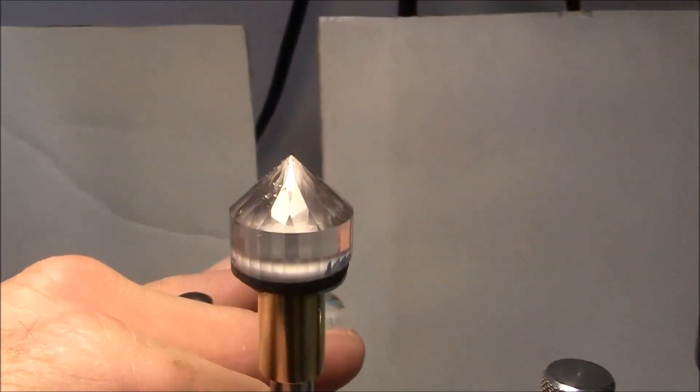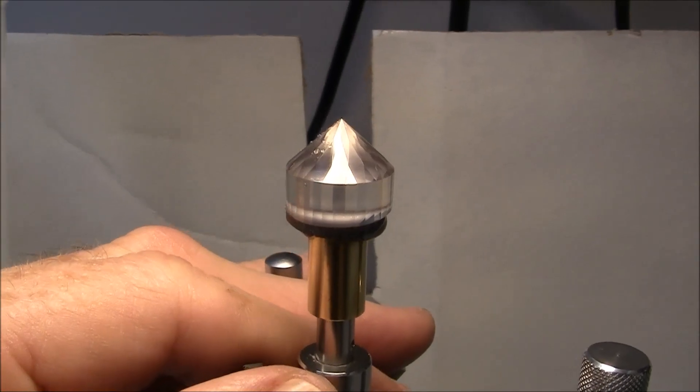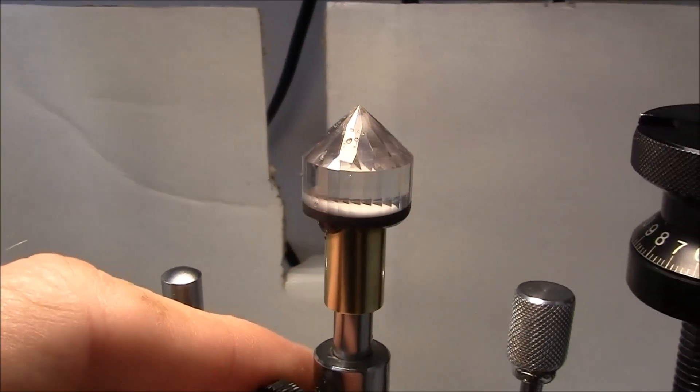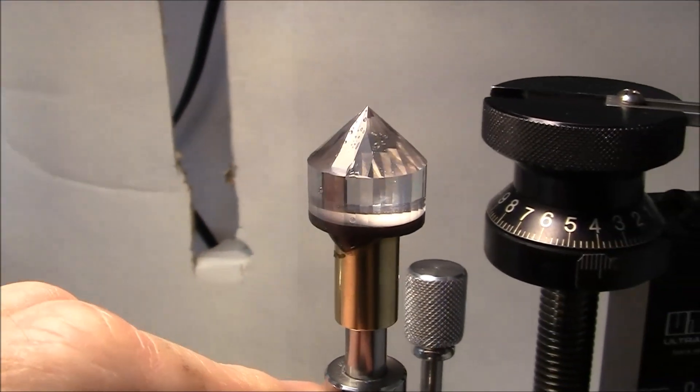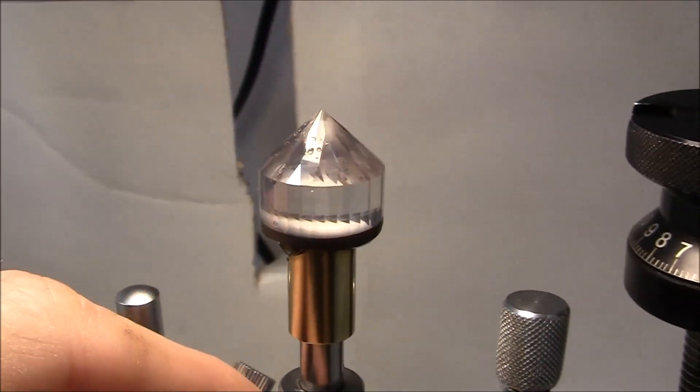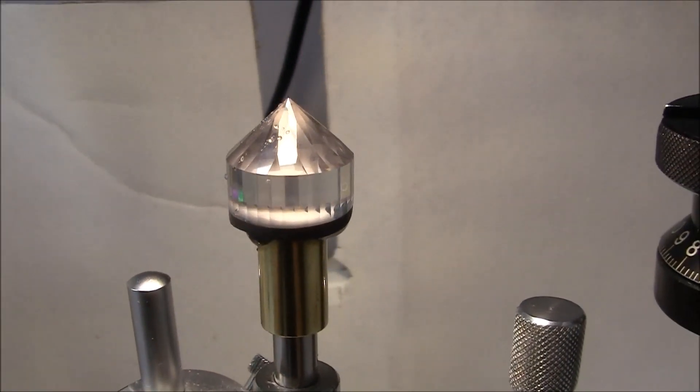Using the 1200 lap now to finish the rest of these facets. I've already cut the girdle facets with the 1200.